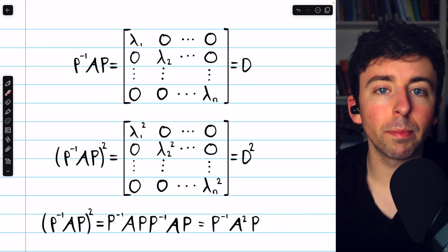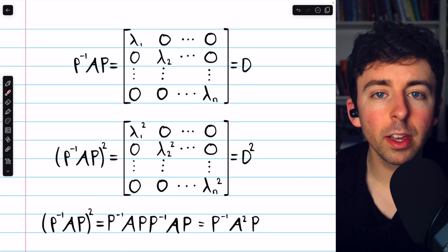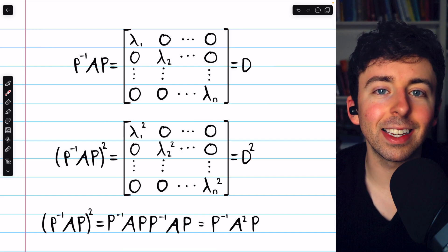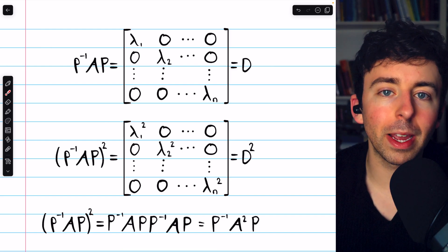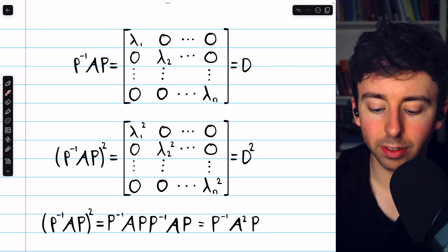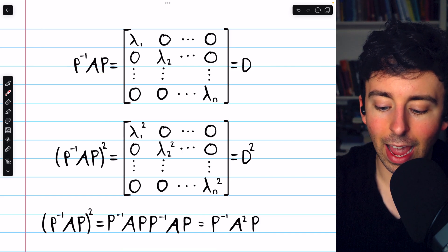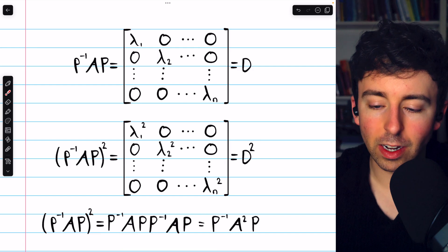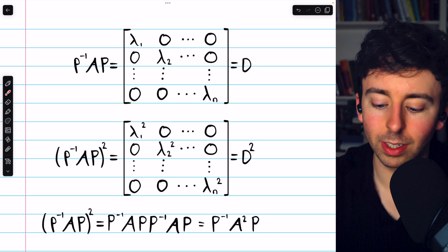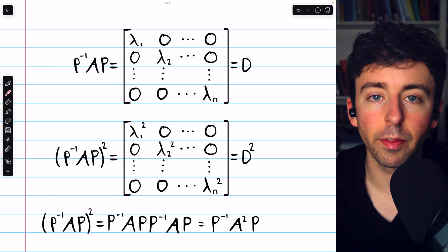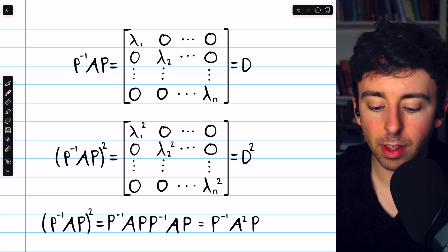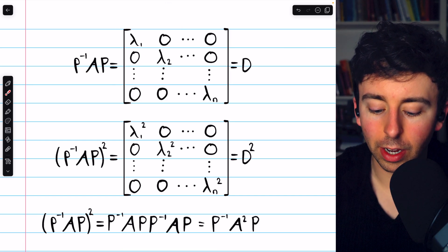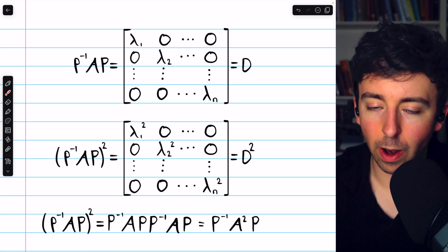Now, what does this all have to do with computing powers of the matrix A? Well, let's suppose that A is a diagonalizable matrix. Then there exists some invertible matrix P, so that P inverse times A times P is a diagonal matrix. And of course, that diagonal matrix would contain the eigenvalues of A. Again, this just comes from the definition of diagonalizability.